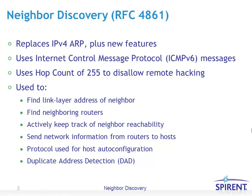Neighbor Discovery messages set the hop count to 255, which is the maximum allowable value for that field — in other words, all 8 bits set to 1. This disallows remote hacking because if any packet came from a subnet other than the one it's received on, it's not considered a valid Neighbor Discovery packet. Neighbor Discovery should only be performed between two nodes that are on the same subnet.